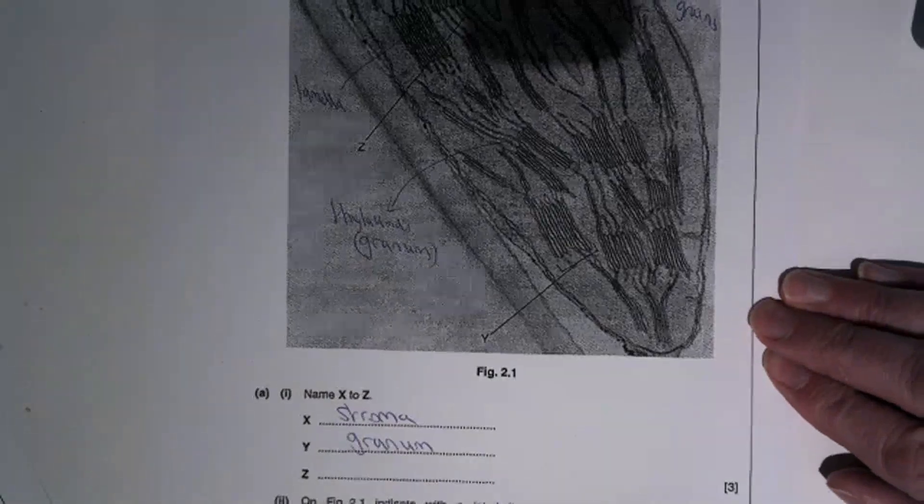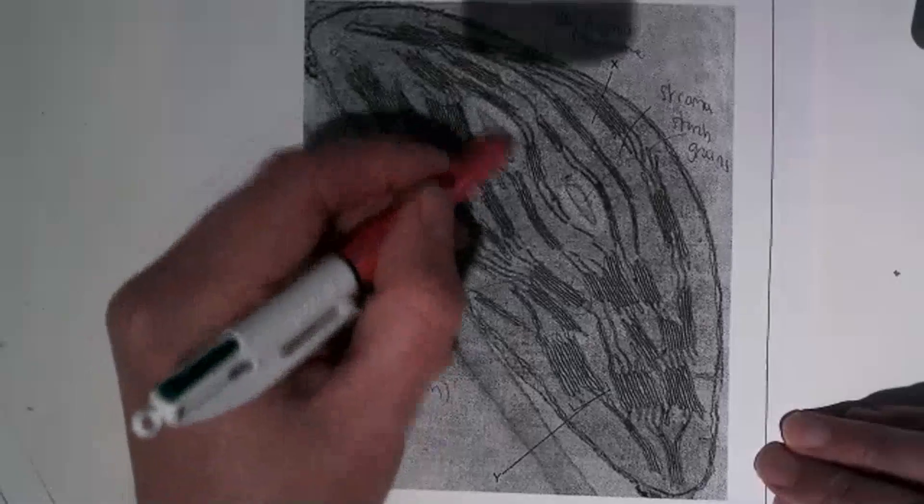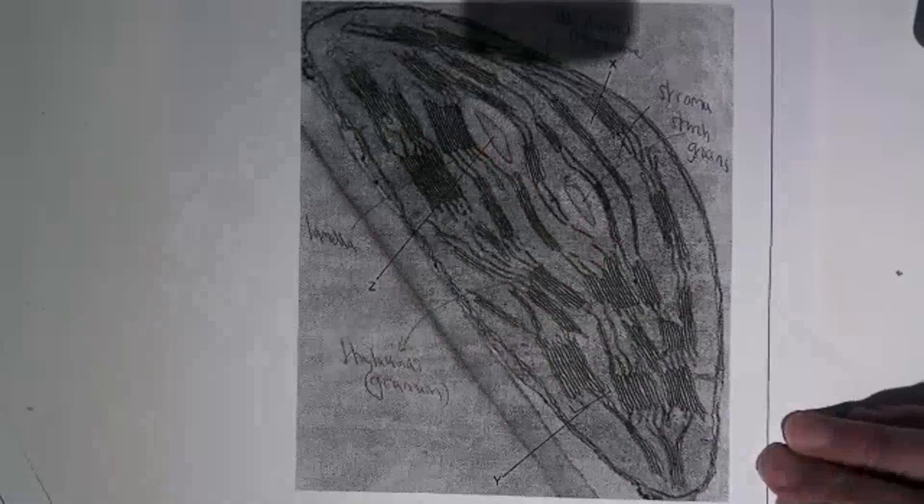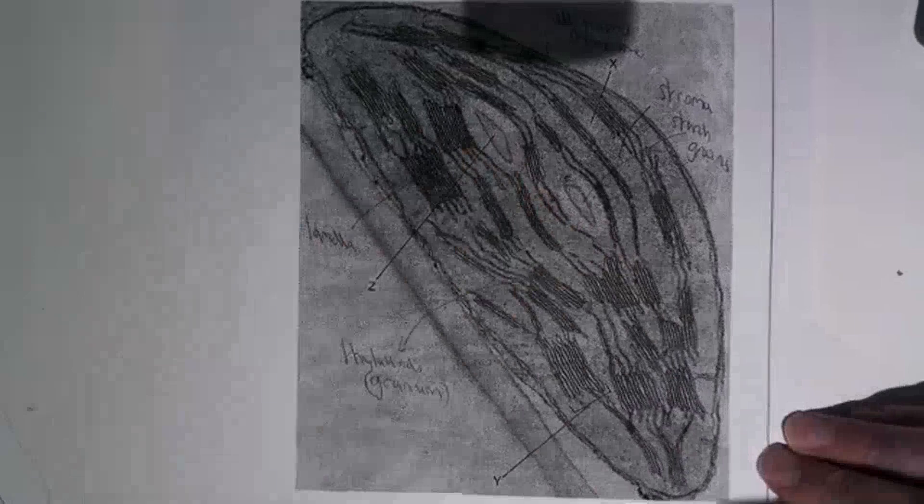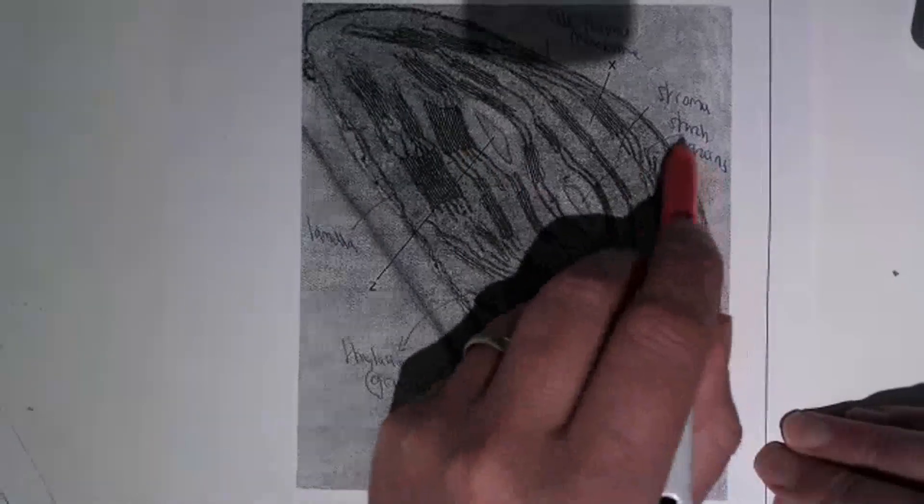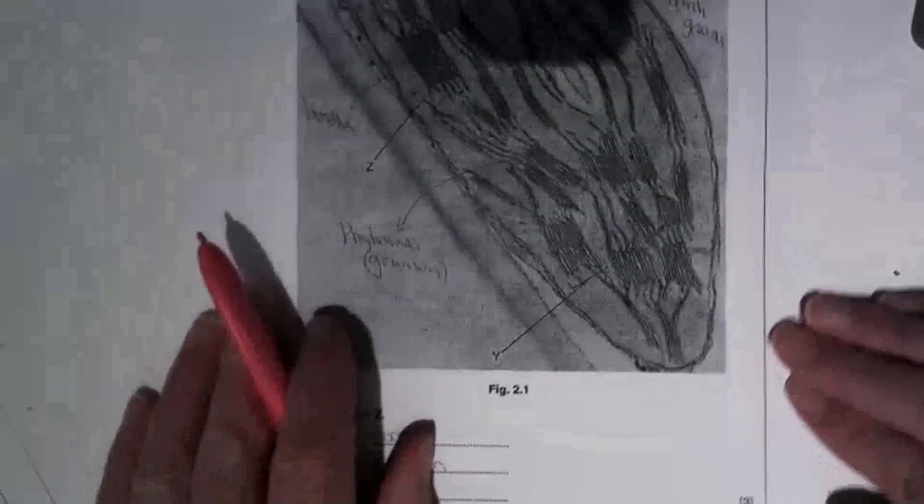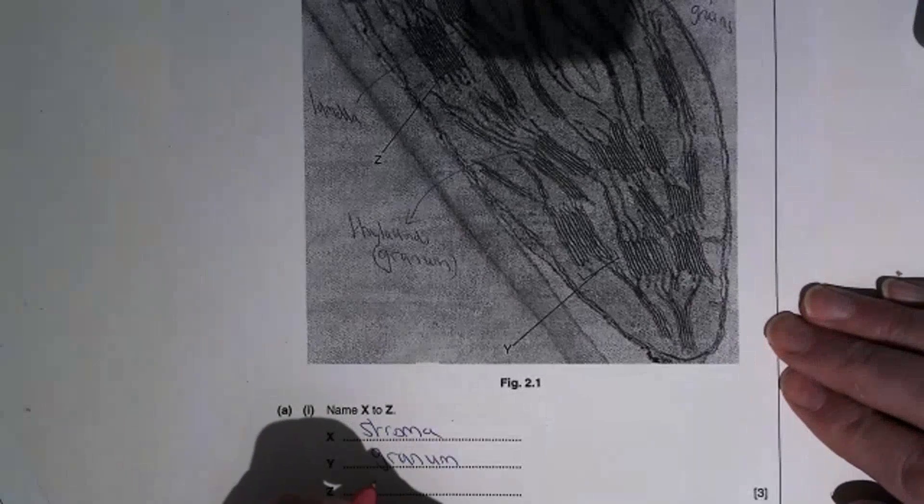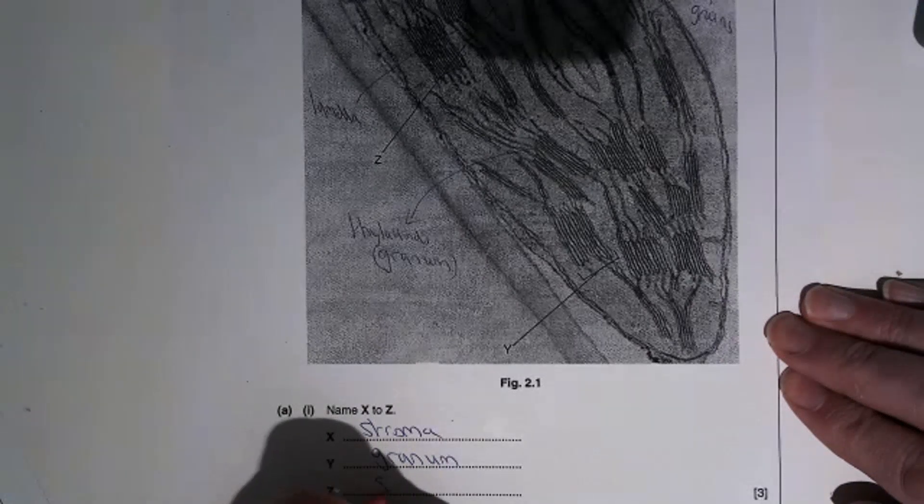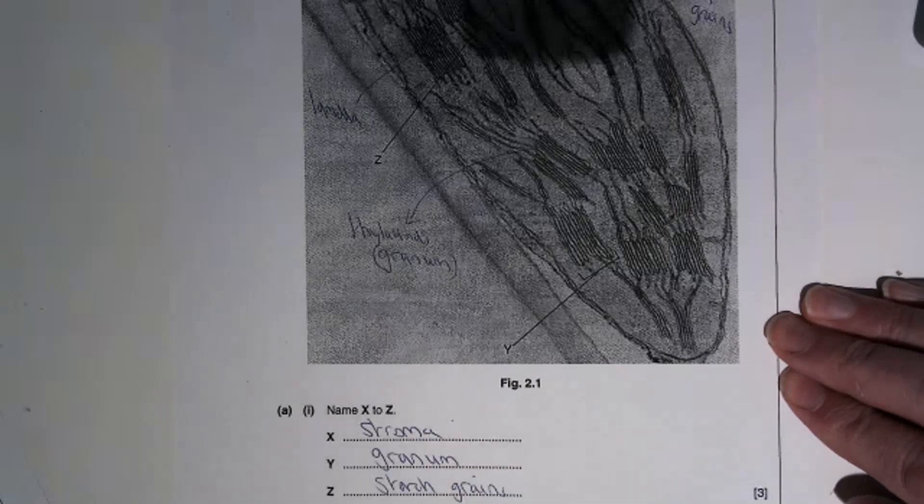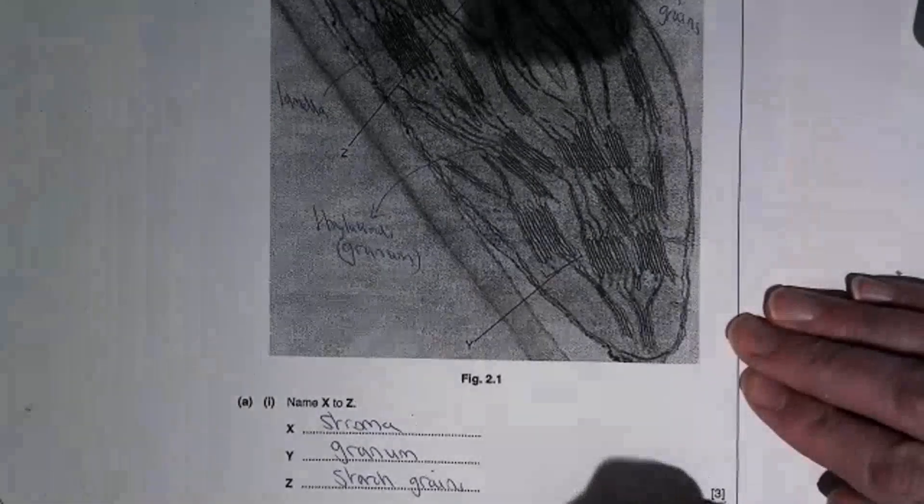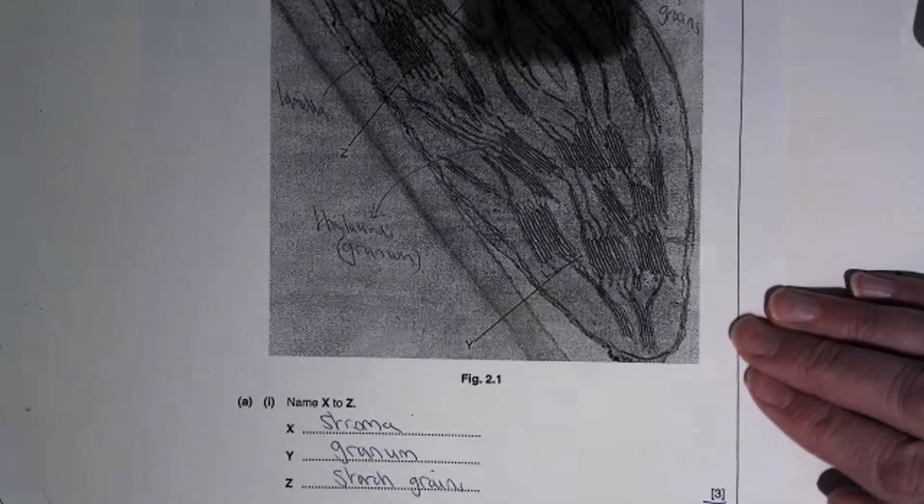And part Z are these structures here that are found inside the chloroplast. There may be more than two, and these are the starch grains from the converted glucose. So three parts, three marks.